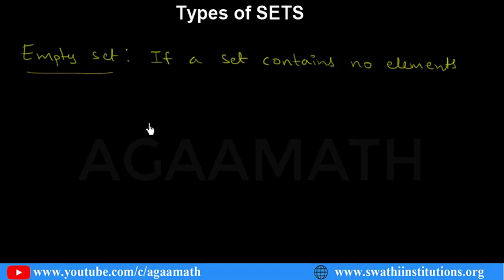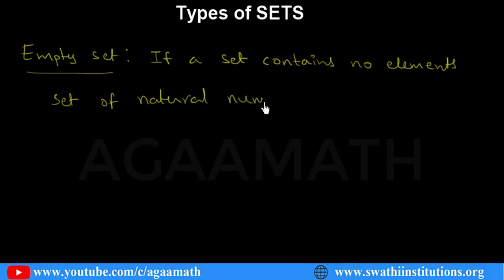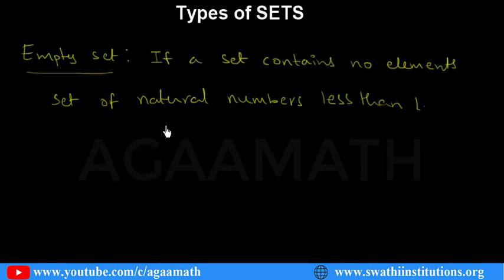For example, the set of natural numbers less than 1. What are the elements? Natural numbers begin from 1, so natural numbers less than 1 is nothing — no elements in this. So such a set is said to be an empty set.